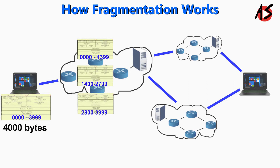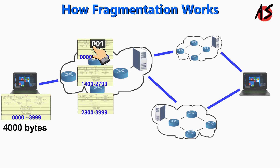The next 3-bit field is the flags field in the datagram. The first bit is reserved. The second bit is called the do-not-fragment bit. If its value is 1, the machine must not fragment the datagram. If its value is 0, the datagram can be fragmented if necessary.